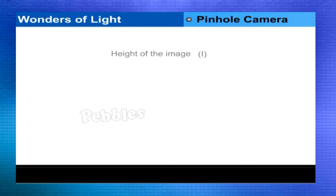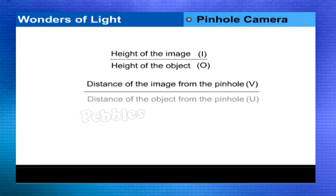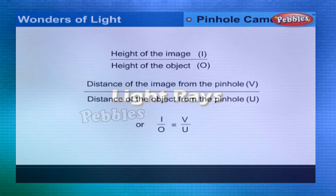Using the property of similar triangles, we can write: Height of the image, I, divided by height of the object, O, is equal to the distance of the image from the pinhole, V, divided by the distance of the object from the pinhole, U. Or: I/O = V/U.